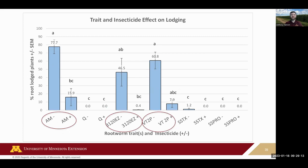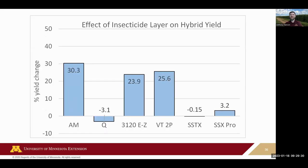We can see root lodging data as well — sometimes there can be a great benefit to insecticides if applied at the right time and under the right weather conditions. Looking at the yield differences slide: with SmartStax and a few other pyramided traits, you're really not seeing a whole lot of yield change when layering insecticide in. But insecticides are helping with some of the single-trait products. This is kind of the money slide in terms of the value of different management approaches.